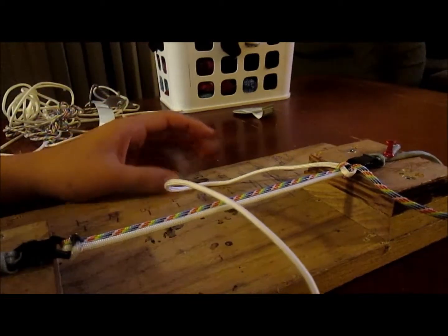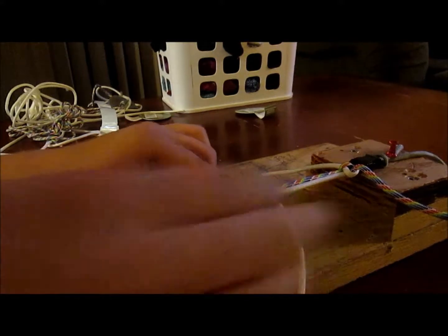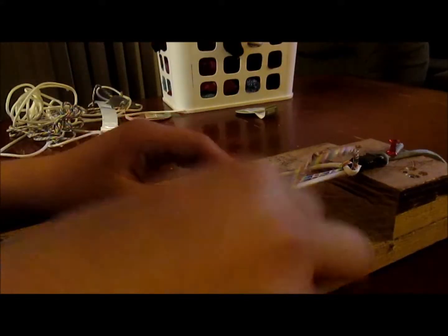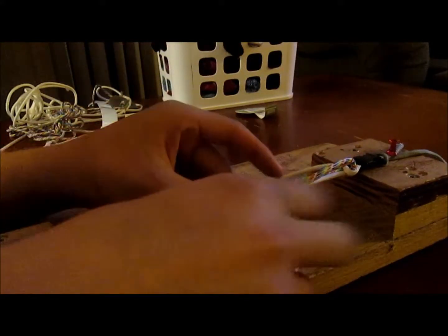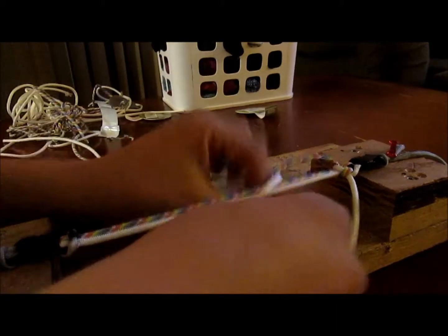Remember, with the cable cord you want in the middle, you're going to put it over. Then you're going to take your other string, put it over the string, and put it through the loop. Just going to pull it tight. Then you're just going to keep on repeating that process all the way to the end.